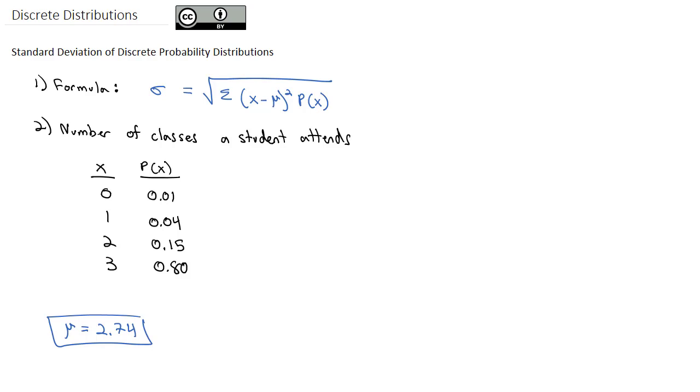Now to find the standard deviation, how spread out things are, the results are around that mean of 2.74, we'll follow this formula.